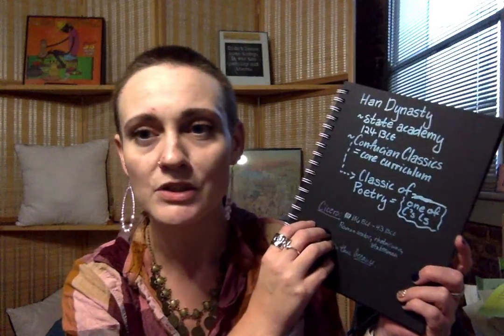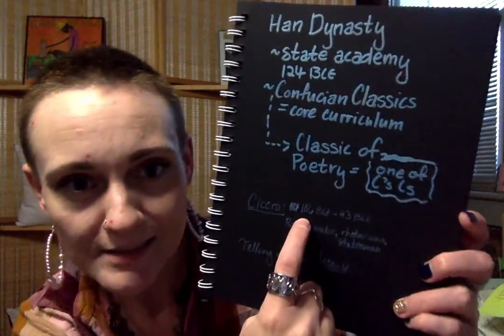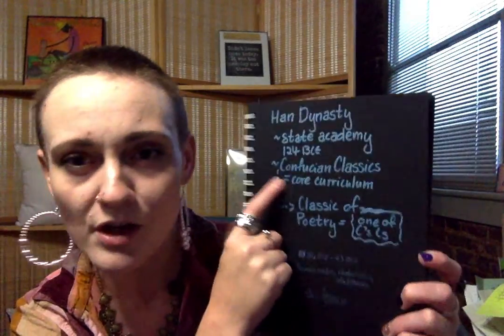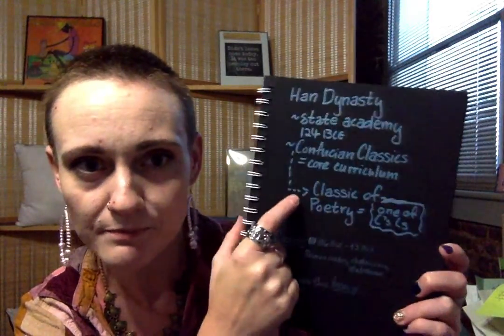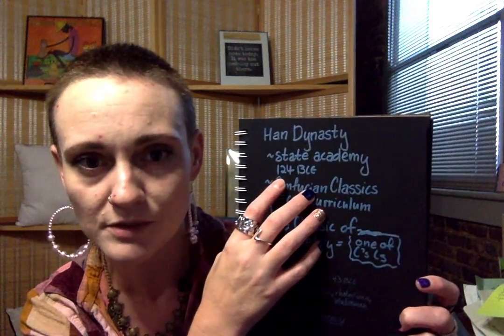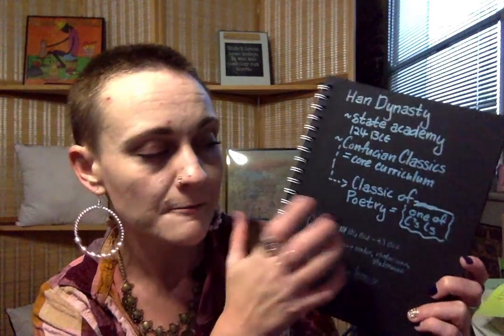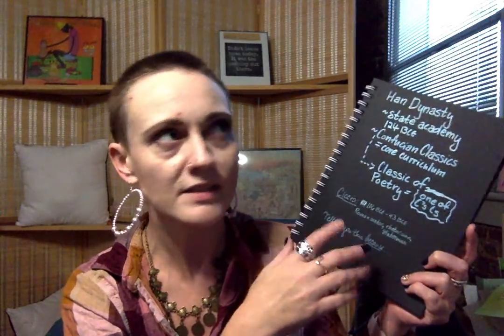Cicero is the key figure for rhetoric and effective uses of language in the European tradition. He was active around 106 to 43 BCE — almost the same time frame as the founding of the Han Dynasty's State Academy. So Cicero over in Rome and the State Academy in China are operating in roughly the same period, which is interesting.